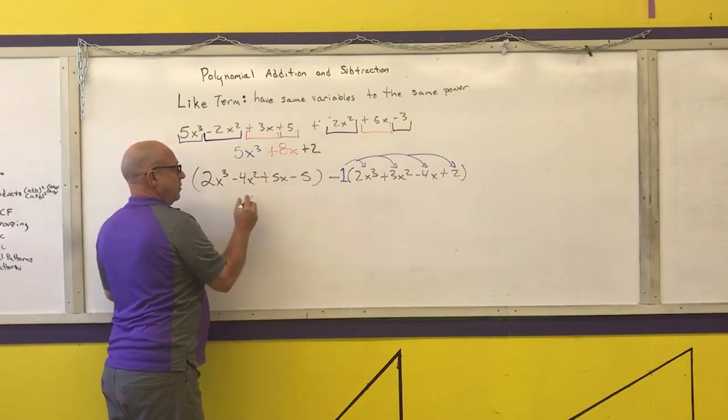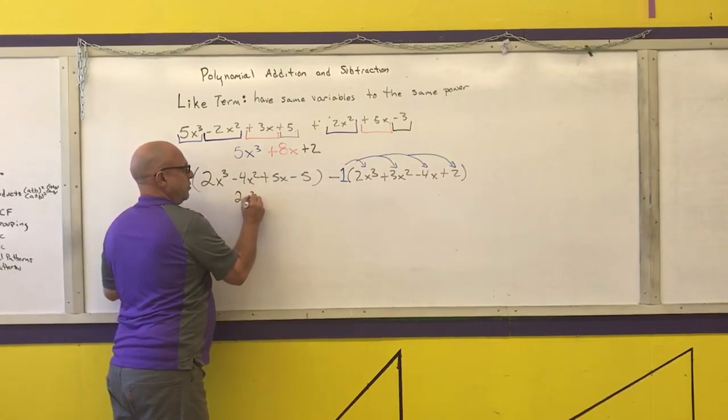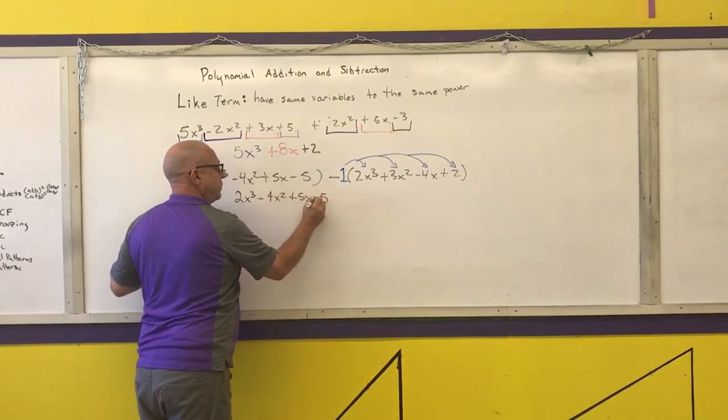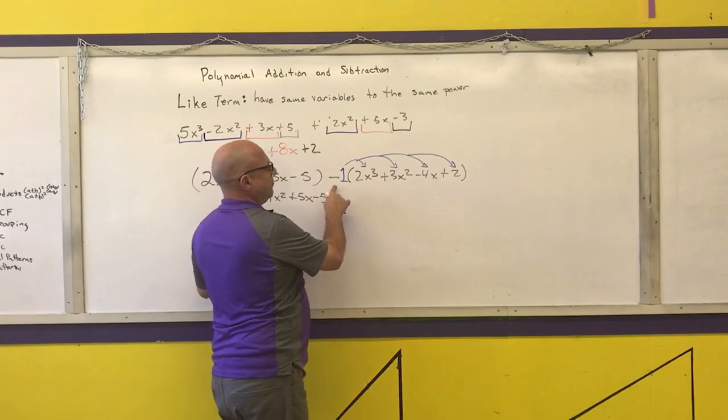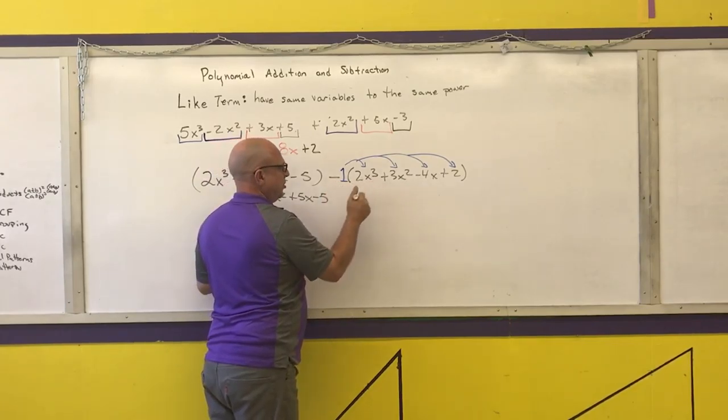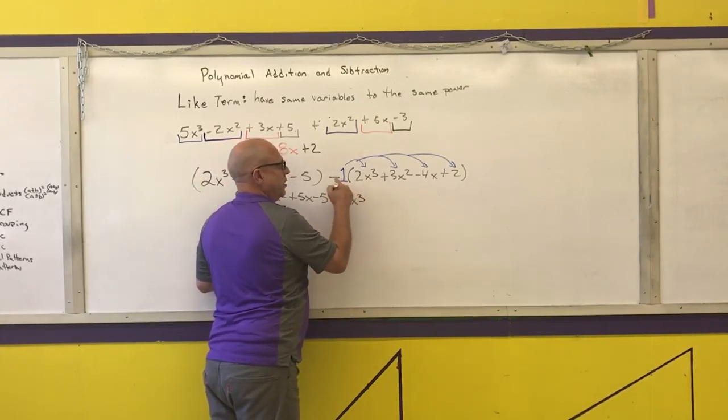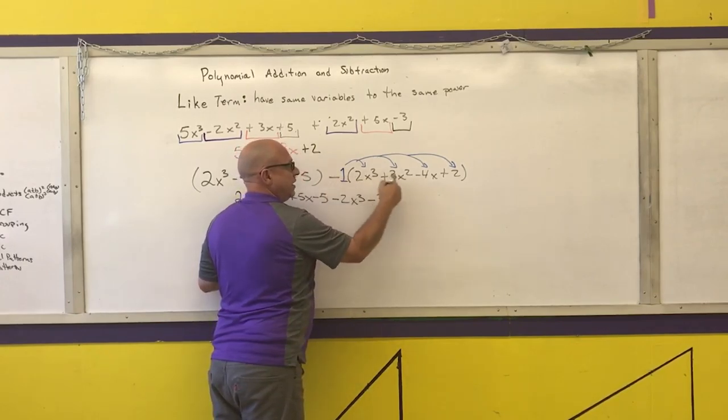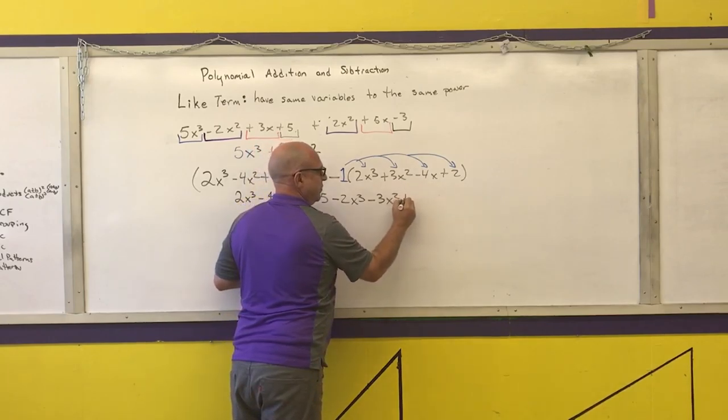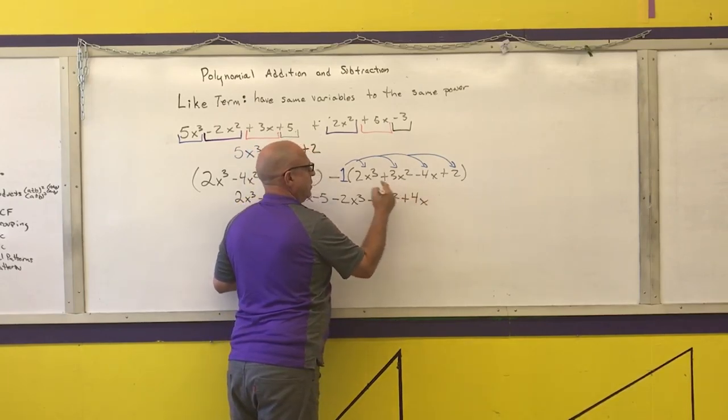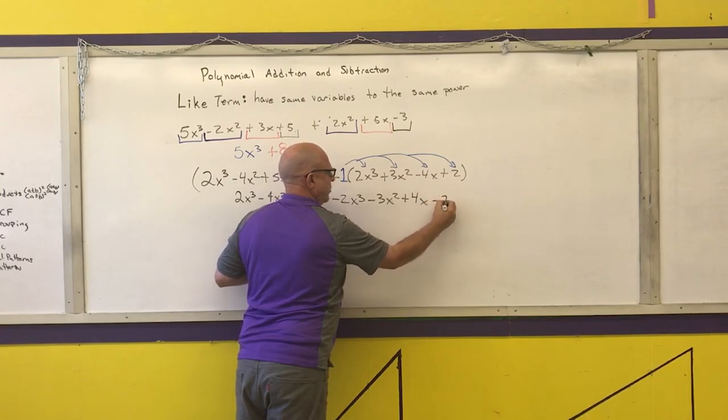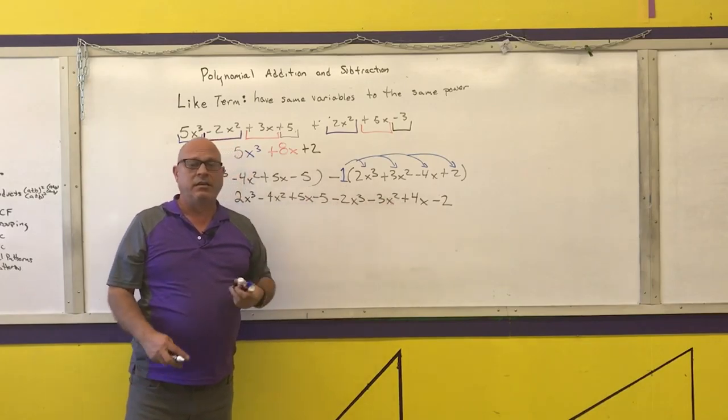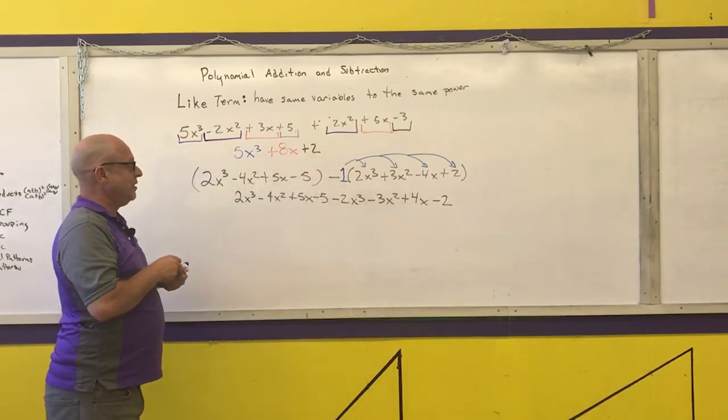I'm just going to copy the first part: 2x cubed minus 4x squared plus 5x minus 5. And then distribute the negative one. Negative one times 2x cubed is negative 2x cubed. Negative times a positive is a negative 3x squared. A negative times a negative is a positive 4x. And a negative times a positive is a negative 2.